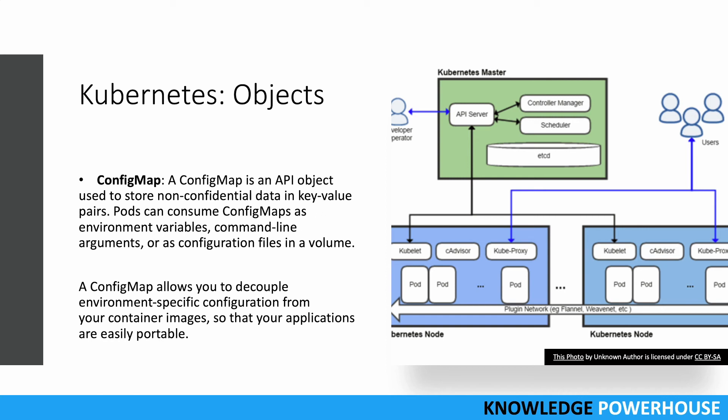ConfigMap is an API object used to store non-confidential data in key-value pairs. Pods can consume a config map, and the master can modify it. A config map contains environment variables, command-line arguments, or configuration files in a volume. Using config map, you can decouple environment-specific configuration from your container images, making applications easily portable. Via the API server, this information can be updated into different pods.